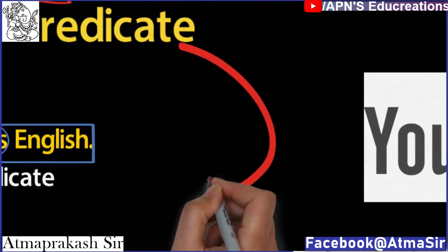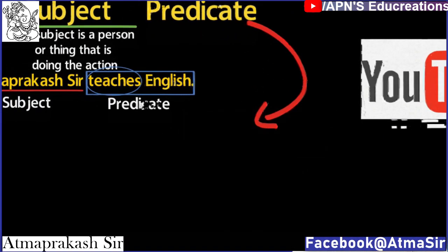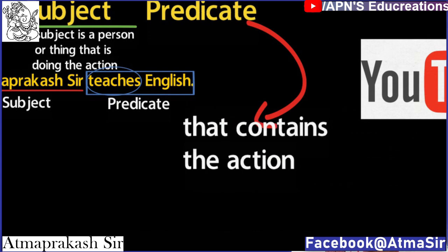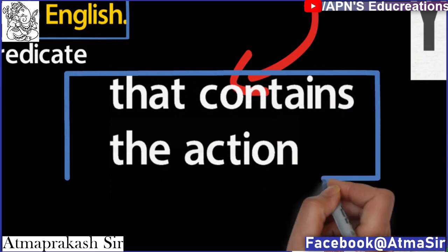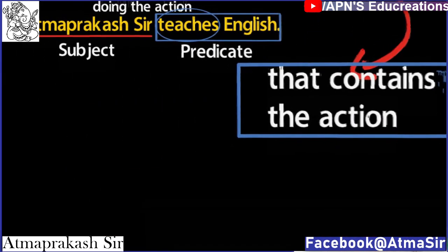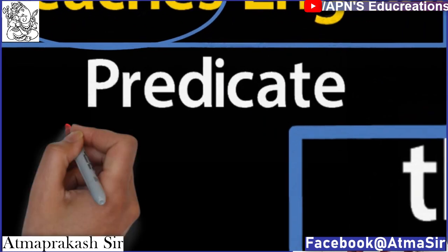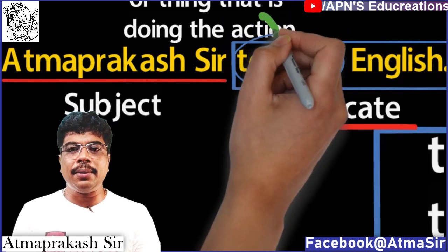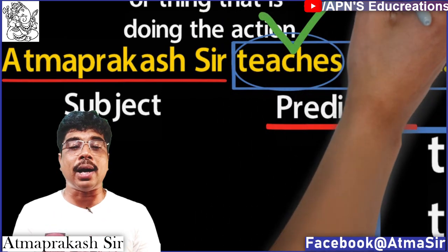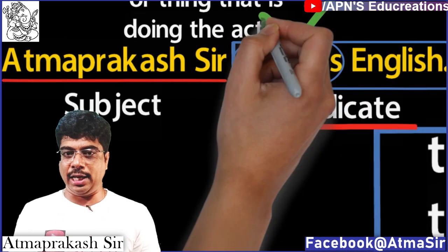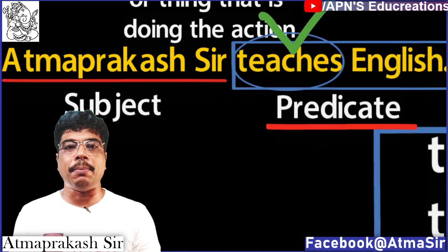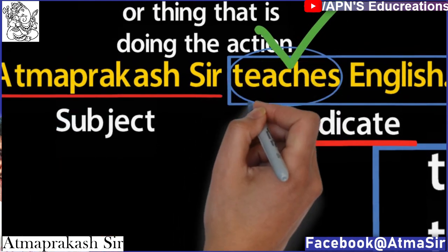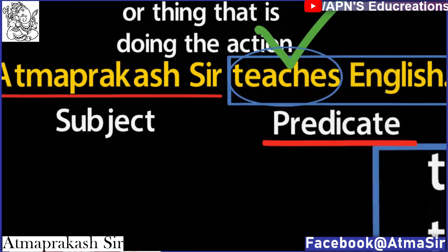The predicate part of the sentence is that part that contains the action. For example, 'teaches English' is the action and it is the predicate of the sentence. A point must be noted that the verb is the most important part of a predicate. In this sentence, the word 'teaches' is the verb.